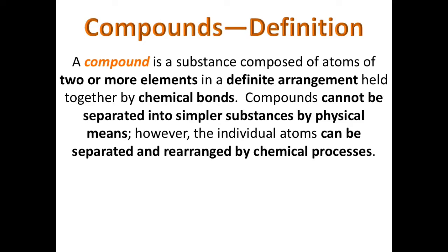We'll start with a simple definition of a compound, which is a substance composed of atoms of two or more elements — distinguishing it from a molecule in which the atoms can be the same element. They are in a definite arrangement and held together by chemical bonds. Compounds generally cannot be separated into simpler substances by physical means; however, the individual atoms can be separated and rearranged by chemical processes.